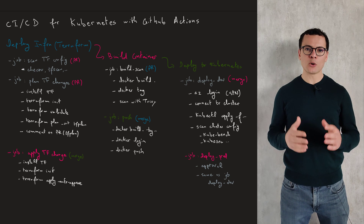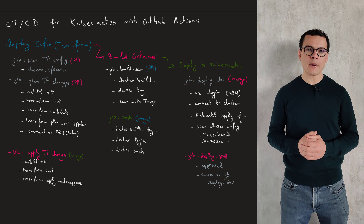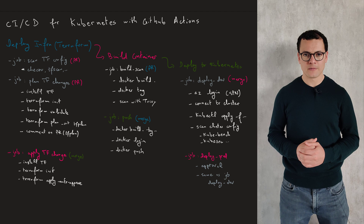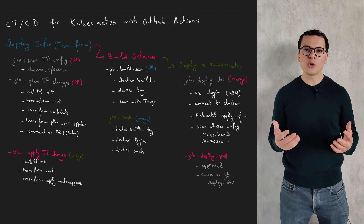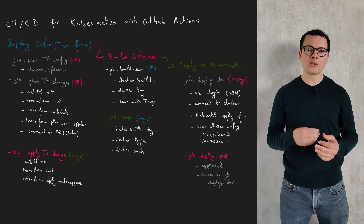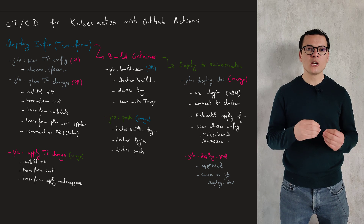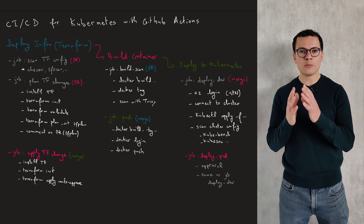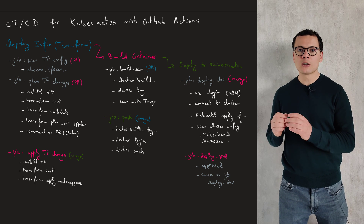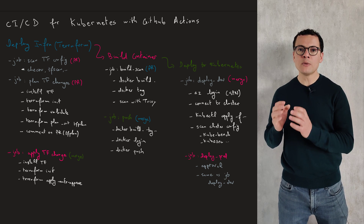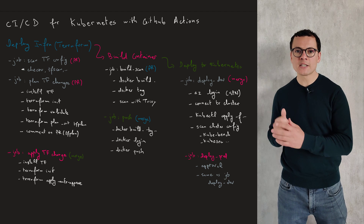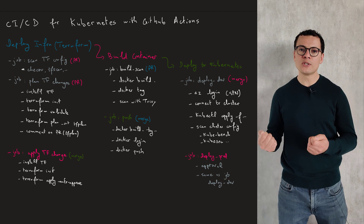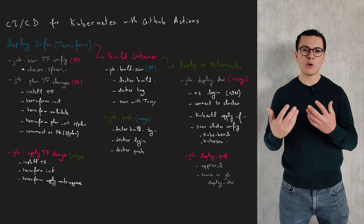In this video, we'll learn how to create a workflow in GitHub Actions to deploy into a Kubernetes cluster. This workflow will start by creating the Docker image, then pushing that image into a registry such as Docker Hub, and then deploying it into a Kubernetes cluster such as AKS, Azure Kubernetes Service, using YAML files.